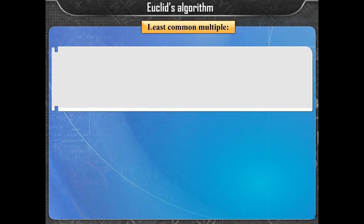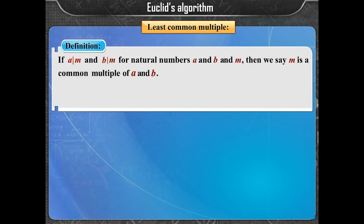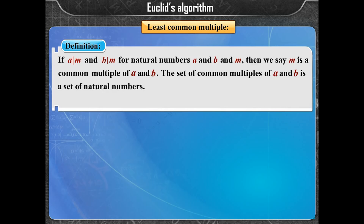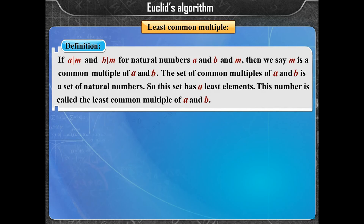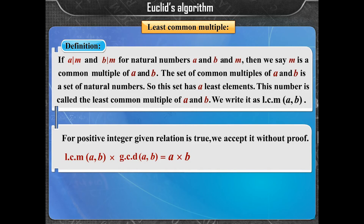Least Common Multiple: If A divides M and B divides M for natural numbers A, B, and M, then M is a common multiple of A and B. The set of common multiples of A and B has a least element, called the least common multiple (LCM). The relation LCM(A, B) × GCD(A, B) = A × B is accepted without proof.